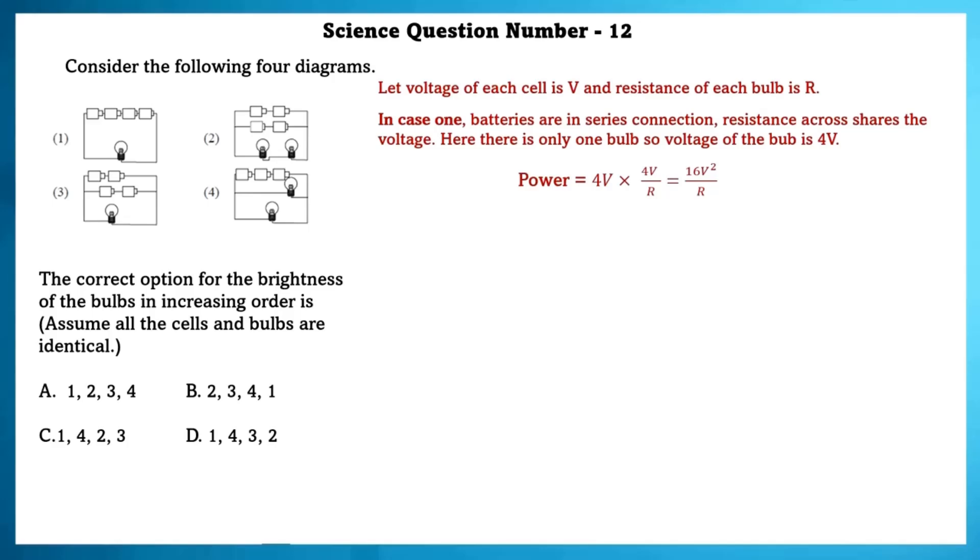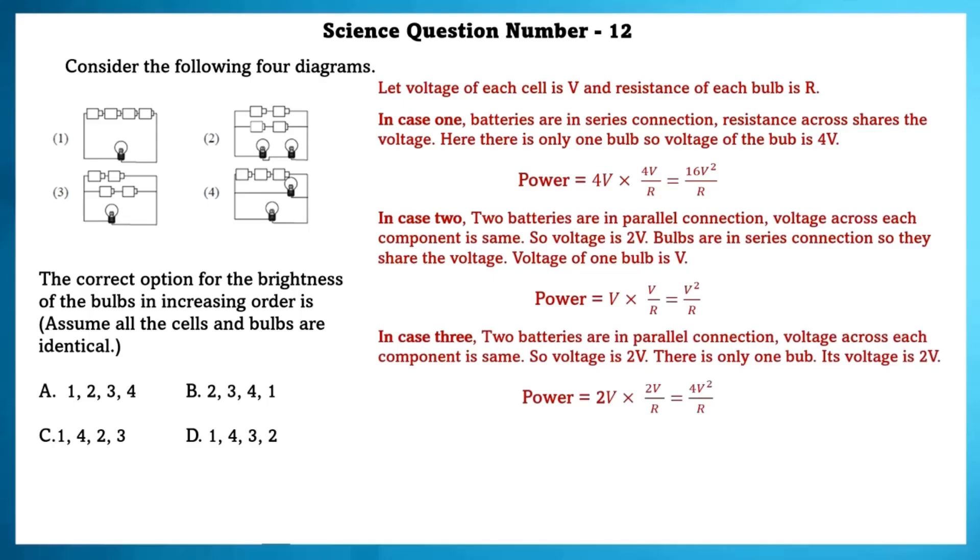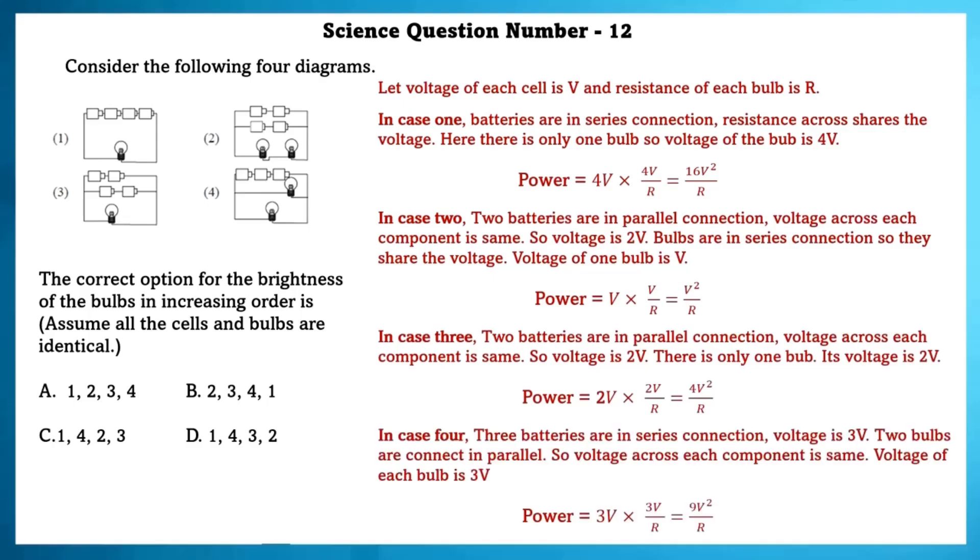Let voltage of each cell is V and resistor of each bulb is R. In case 1, power is equal to 16 V square by R. In case 2, power is equal to V square by R. In case 3, power is equal to 4 V square by R. In case 4, power is equal to 9 V square by R. Therefore, the increasing order of brightness is the same as the D option.